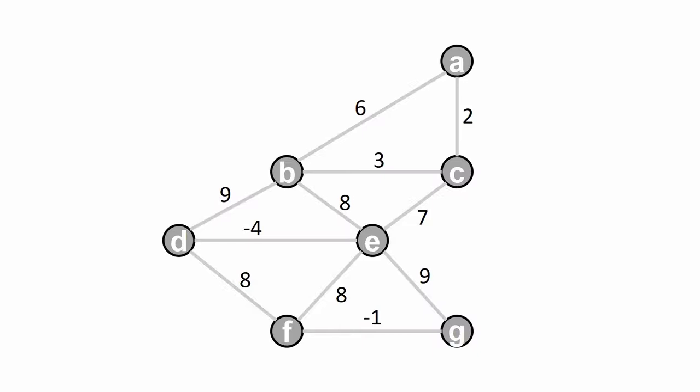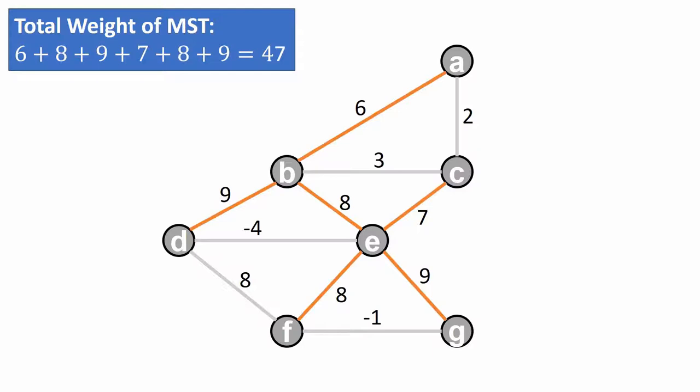A spanning tree is a connected and acyclic subgraph that contains all vertices. For example, the vertices and edges in orange form a spanning tree. The weight of the spanning tree is the sum of all edge weights. In this case, the weight is 47.